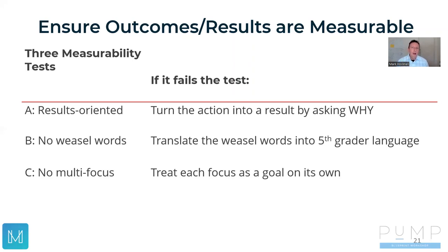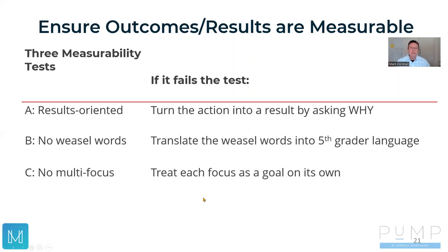Each one of these results and outcomes must be a single focus on its own. We can't have 'efficient and effective service delivery,' for example, because those two things are often in conflict. We'd have to define what effective and efficient actually mean when that service delivery is done well, and the outcome we expect from it, and measure those things separately. So we use these measurability tests to first come up with the language for the results.